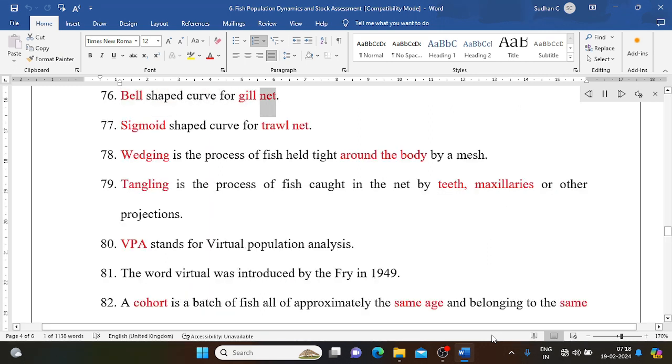Bell-shaped curve for gill net, sigmoid-shaped curve for trawl net. Wedging is the process of fish held tight around the body by a mesh. Tangling is the process of fish caught in the net by teeth, maxillaries, or other projections.